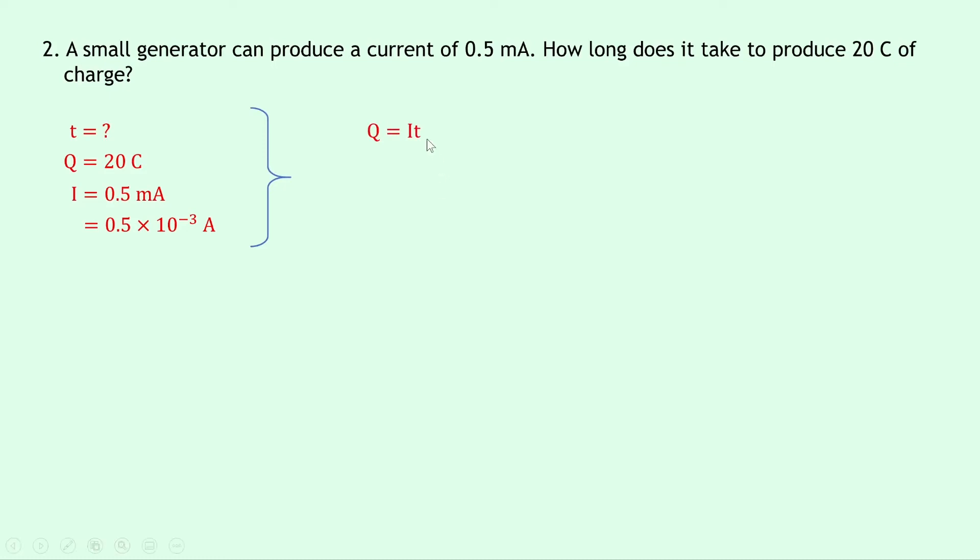So writing down our equation now, we have Q equals IT, and rearranging for time we need to divide both sides by I, so we get T equals Q over I, and substituting in the numbers now gives us 20 divided by 0.5 times 10 to the minus 3, and putting that into your calculator gives a final answer of 4 times 10 to the 4 seconds.